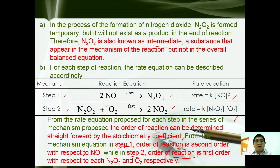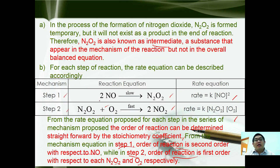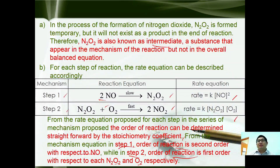This is something a little different from what we mentioned earlier — that the order of reactions cannot be directly taken from the stoichiometric coefficients of the overall equation. However, in this case it is different because we are talking about a mechanism: a detailed step-by-step description of how the reaction proceeds. Therefore, when discussing mechanisms, the order of reactions can be directly taken from the stoichiometric coefficients.